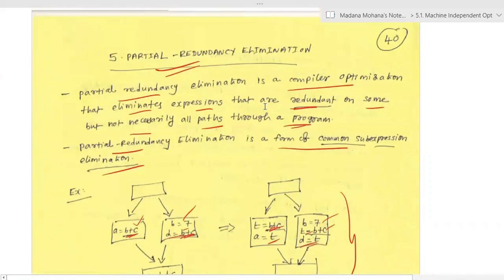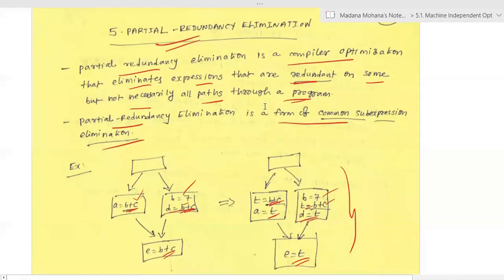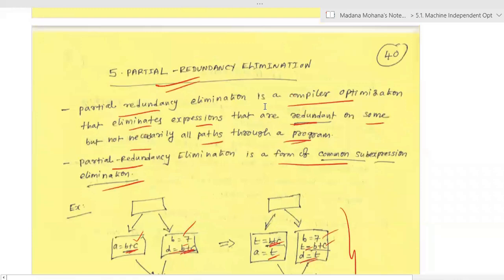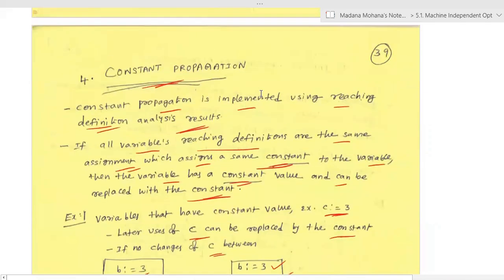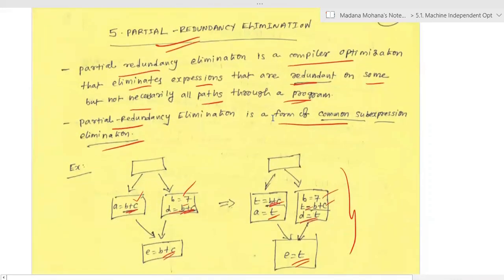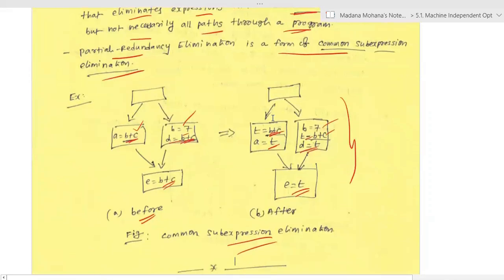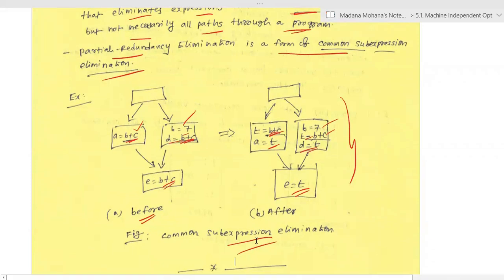Summary of this lecture: we discussed loops in flow graphs, then constant propagation, then partial redundancy elimination. In the next lecture we'll discuss an important concept of code optimization — data flow analysis — the last concept of machine-independent code optimization.